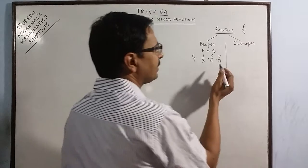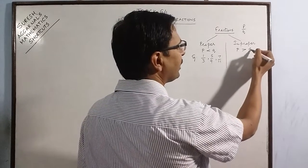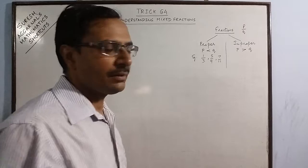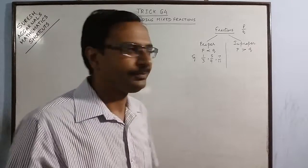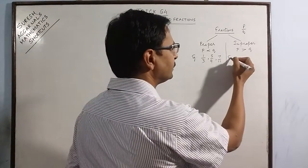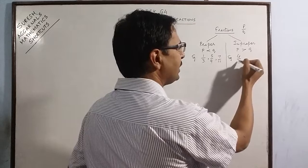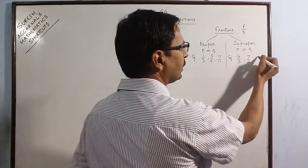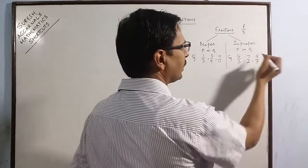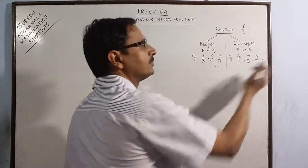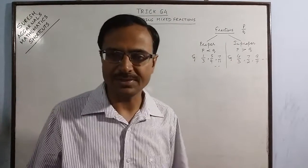Simultaneously, if the numerator is greater than the denominator, then we call it an improper fraction. For example, say 4 upon 3, 7 upon 2, 9 upon 7 and so on. These are examples of proper and improper fractions.